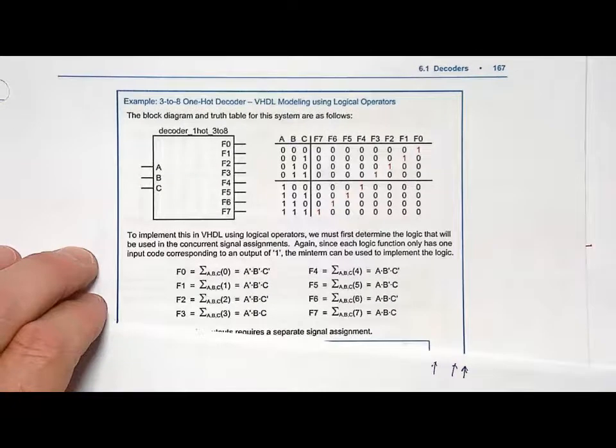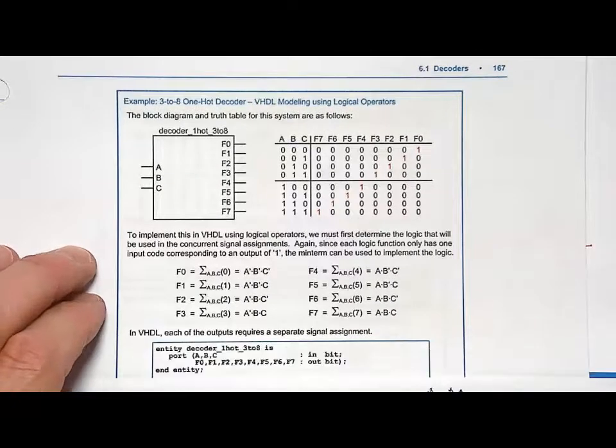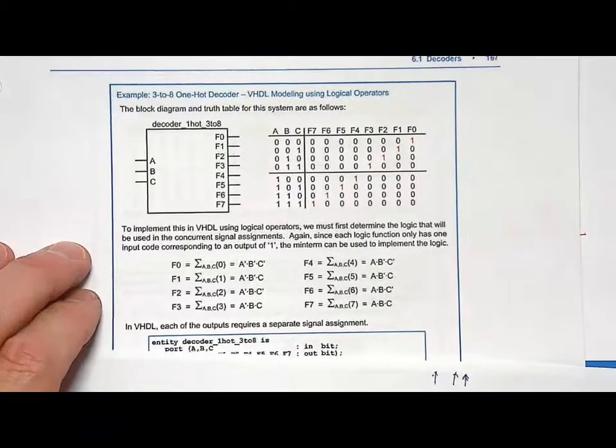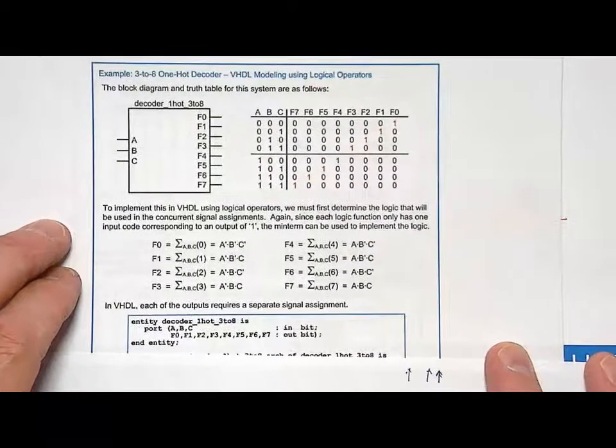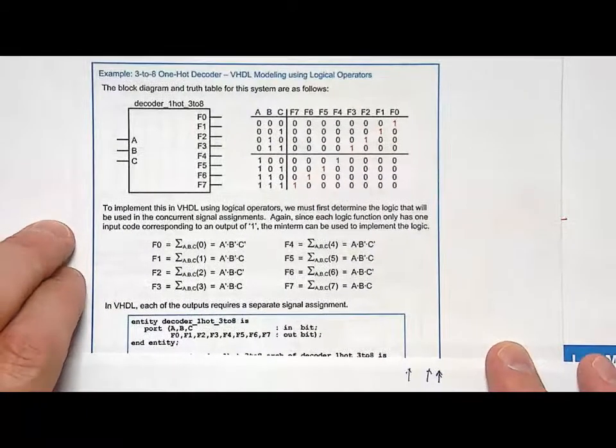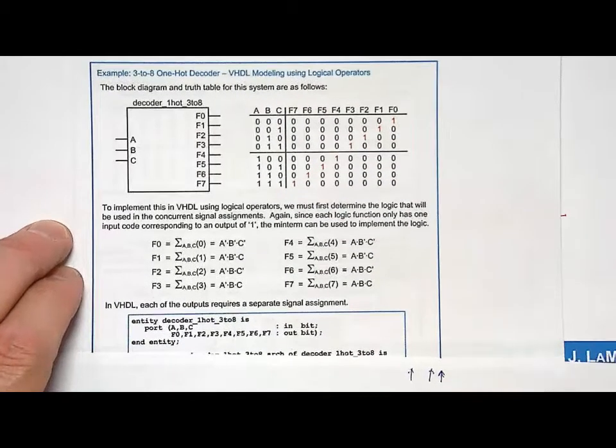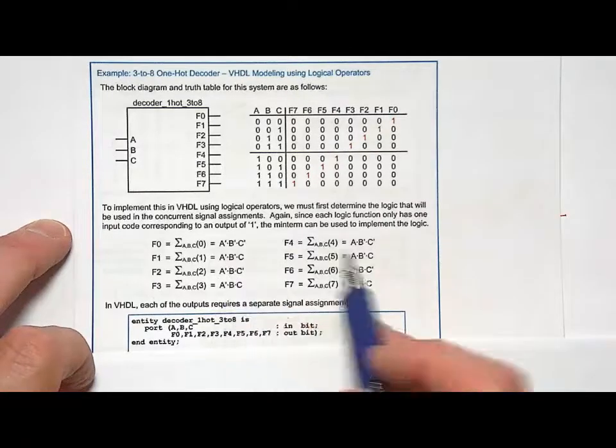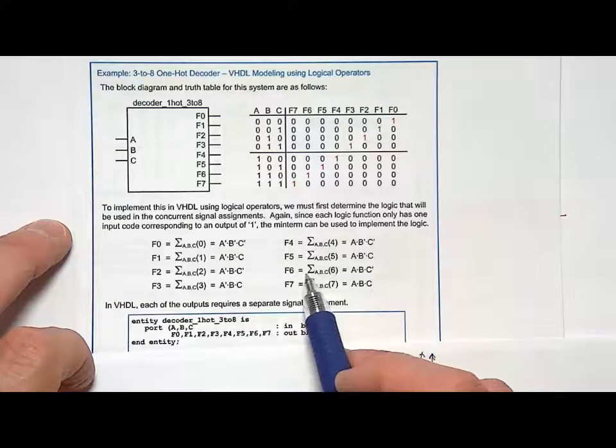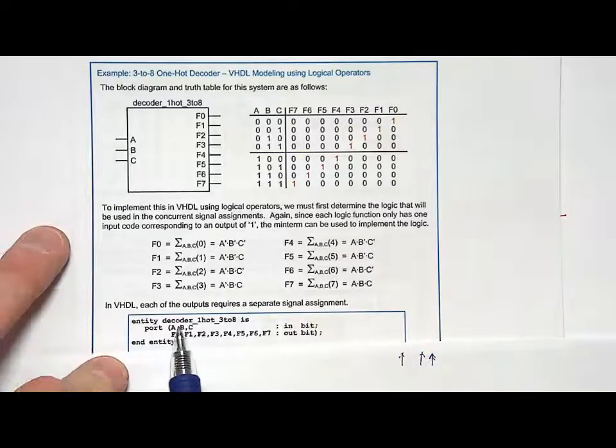If you used logical operators, so concurrent signal assignments with logical operators, that would be a very straightforward way to implement basically a classical design approach that you did by hand. And let's look at that really quick just to show how you would do that with logical operators. So this is my, this is the logic I want to create. So I've got 8 logic expressions I need to implement in VHDL.